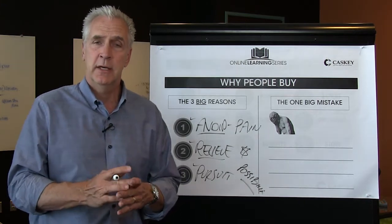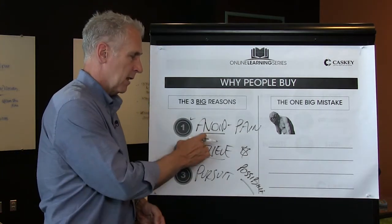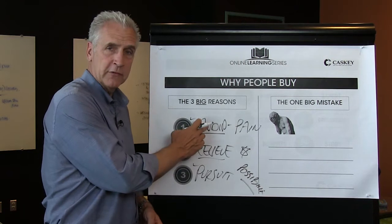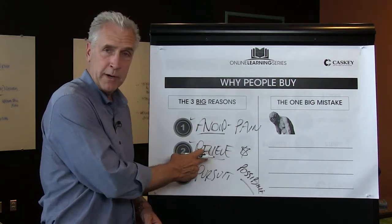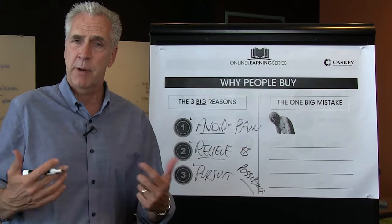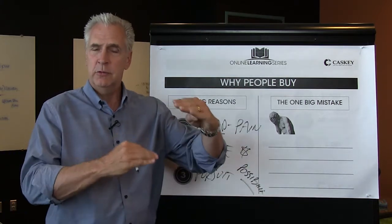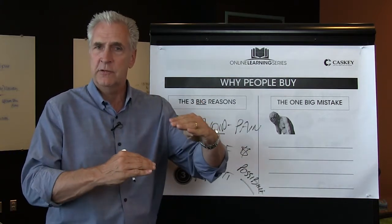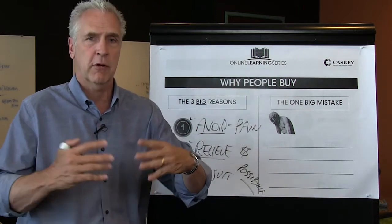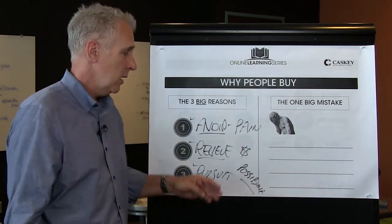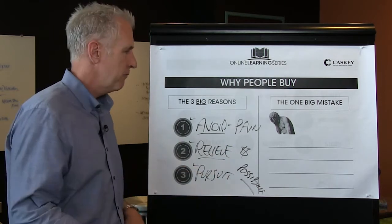One thing I would recommend is you get a piece of paper out and start to write down in three columns: what kinds of problems do you help your customer avoid, what kinds of problems do you help them relieve, and what kinds of possibilities or opportunities do you help them pursue. That gives you a line listing and a checklist so that when you're in front of prospects or crafting messages or email messages, that will help you inform that.